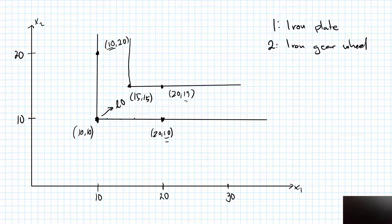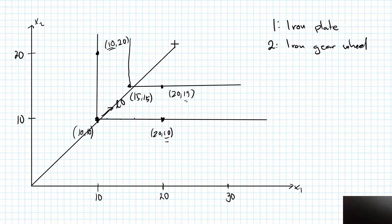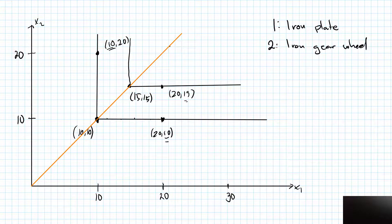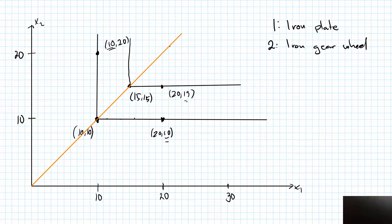All indifference curves will be L-shaped like this, and the corners will always be at points where I have the same amount of iron plates as iron gear wheels. That is, all the corner points will be on a straight line from the origin with a slope of one. Let's make it orange so we don't confuse this straight line with an indifference curve. So indifference curves will always be L-shaped if I have two goods that are perfect complements. However, it's not necessary for the corners of these L-shaped indifference curves to line up on a straight line with a slope of one — it's possible for this orange curve to have a different slope.